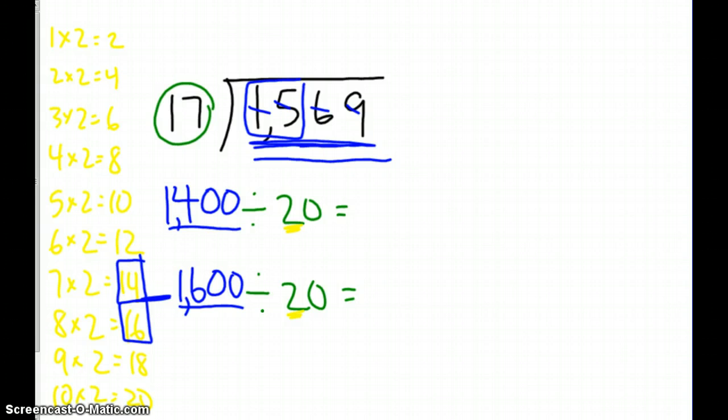Finally, I'm going to look at my entire equation and say 1,400 divided by 20 equals—well, I know that 7 times 2 equals 14. Therefore, 7 times 20 equals 140. Therefore, 70 times 20 equals 1,400. And down here, I know that 8 times 20 equals 160. So 80 times 20 equals 1,600.